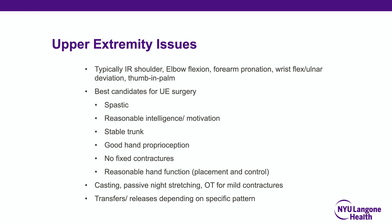Upper extremity issues in cerebral palsy are typically characterized by internal rotation of the shoulder, elbow flexion, and pronation, with substantial loss of forearm supination. Wrists are held flexed and ulnarly deviated, often with a thumb-in-palm deformity. Not all patients are appropriate for upper extremity surgery. For tendon transfer, the patient must have reasonable intelligence and motivation, be able to follow directions, have a stable trunk, and good hand proprioception. Without these prerequisites, the transfer will fail. For most children, treatment focuses on occupational therapy, casting, and passive night stretching.